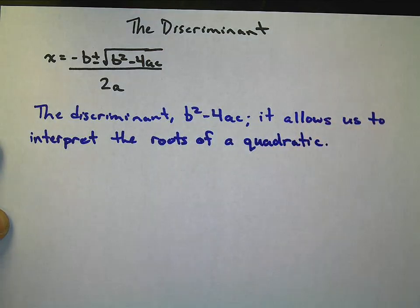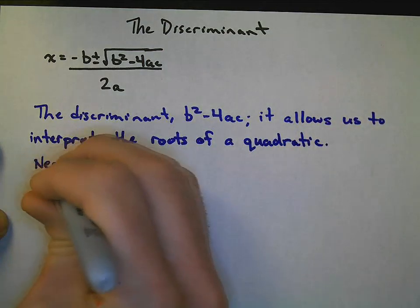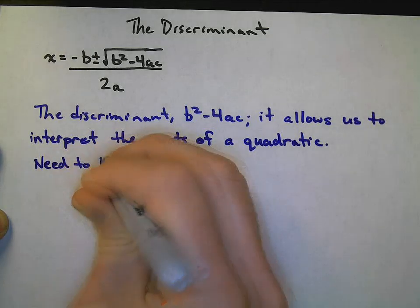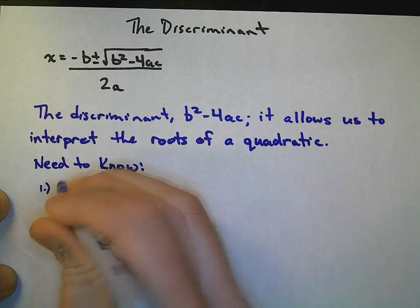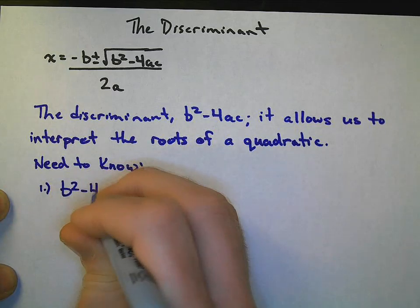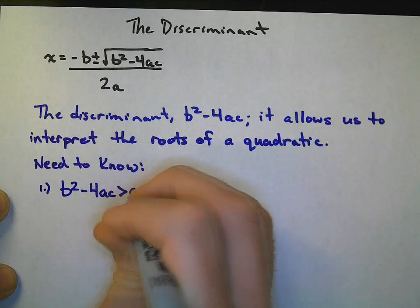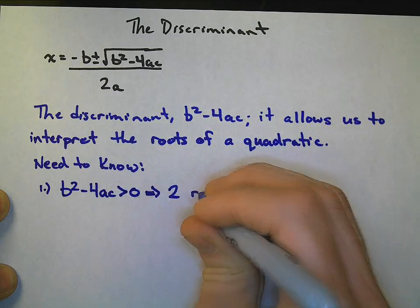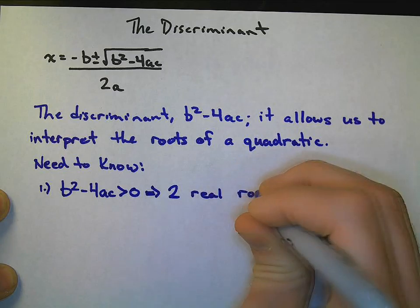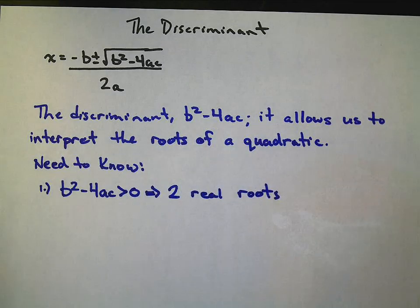Here's what you need to know. First, if b squared minus 4ac is greater than 0, you have, or that quadratic has, two real roots.